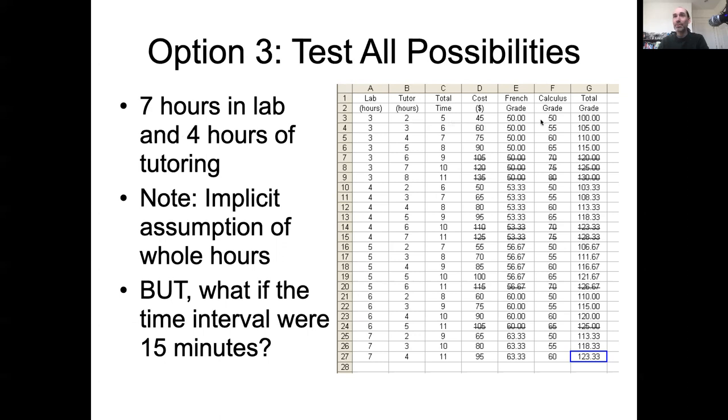Total time, total cost, total grade, passes. But can we do better? So we can try different permutations of increasing different hours. Here, we've X'd out the ones that fail to meet a constraint.